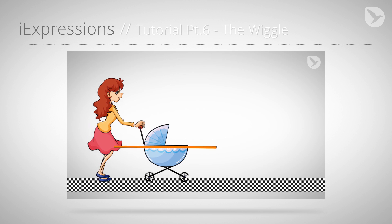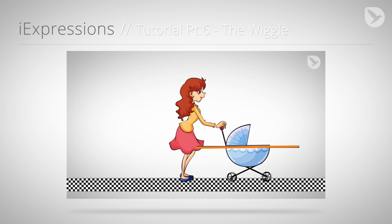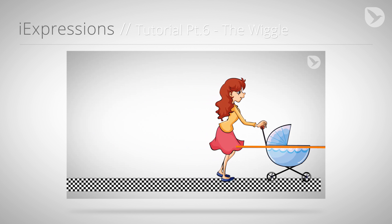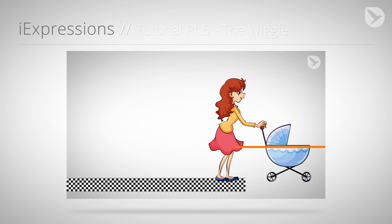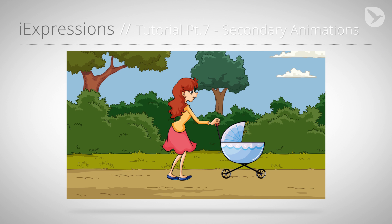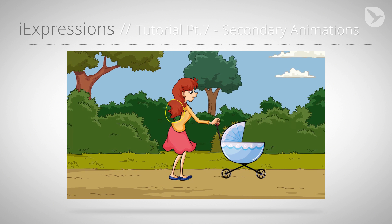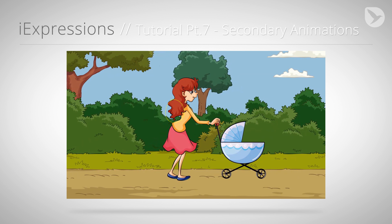In part 6 we add some wiggling to the baby buggy — of course it only wiggles when the baby buggy is moving. In the final part 7 we add some secondary animations to add more realism to our character. She is nicely breathing now and her hair is swinging when she moves.